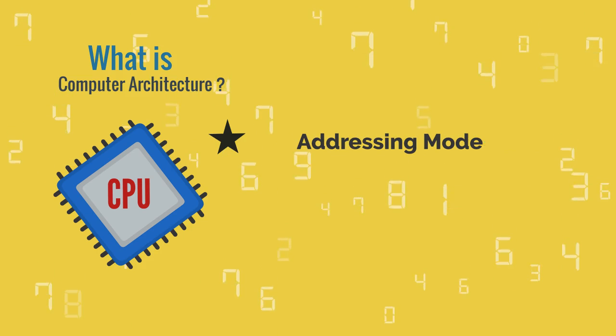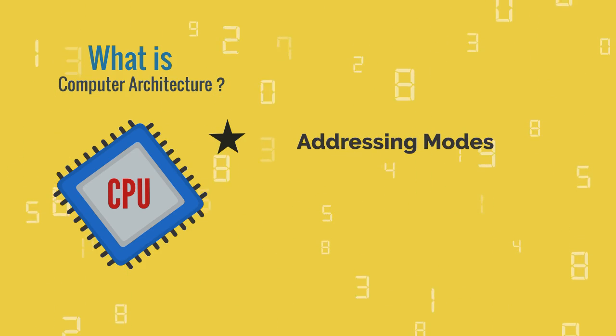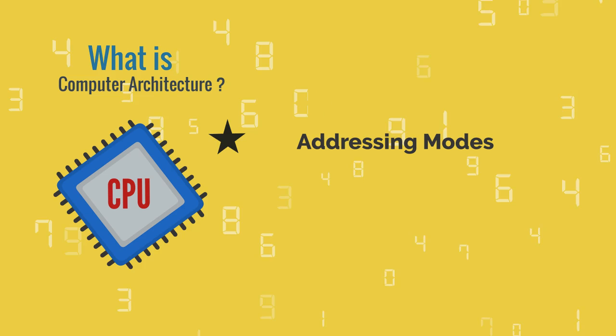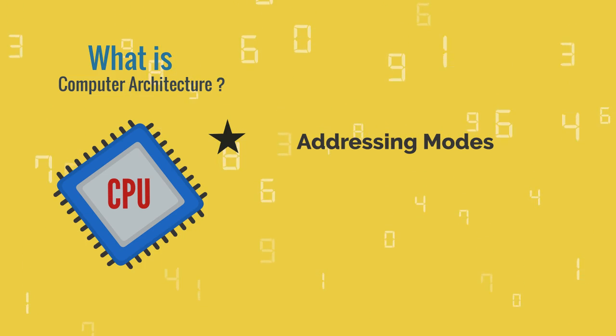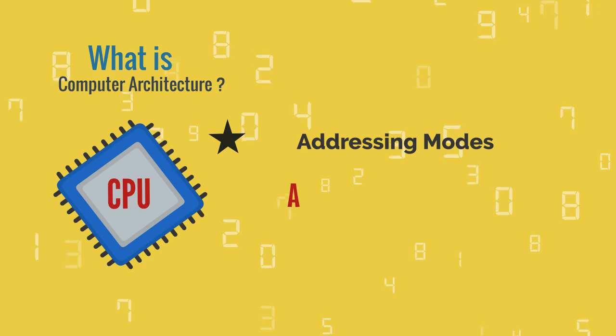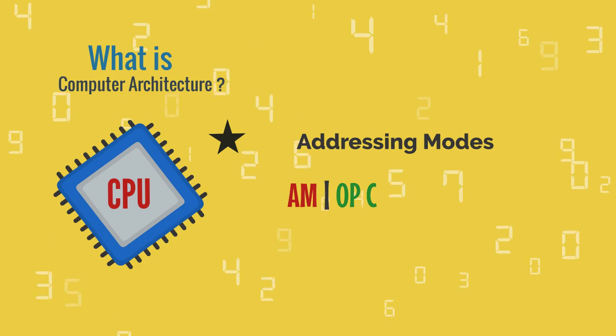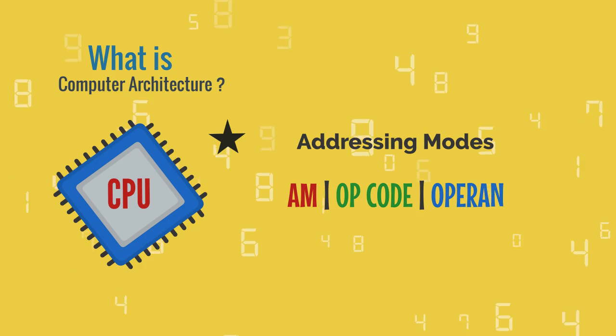Addressing modes are also included in computer architecture. The instruction set of a CPU consists of three parts: addressing mode, opcode, and operand.